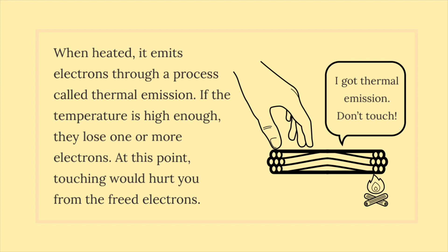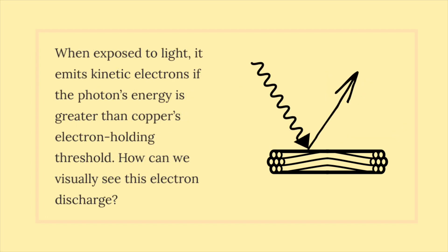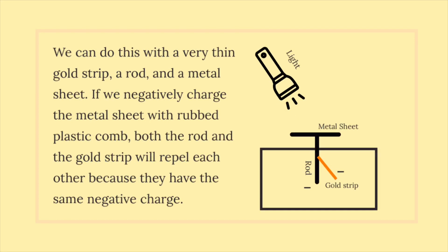When exposed to light, it emits kinetic electrons if the photon's energy is greater than copper's electron-holding threshold. How can we visually see this electron discharge? We can do this with a very thin gold strip.